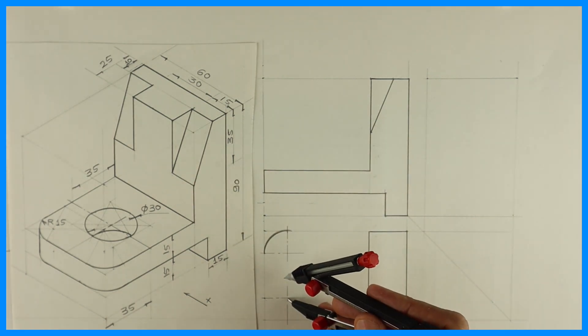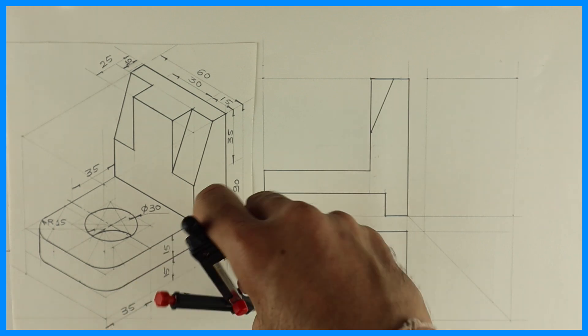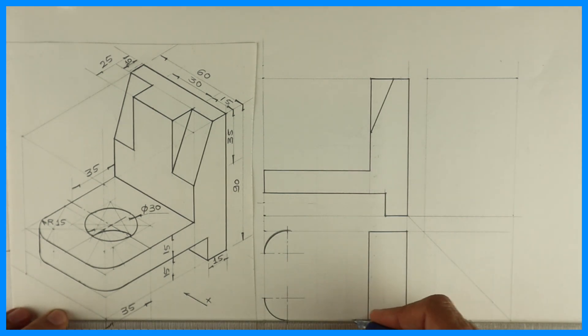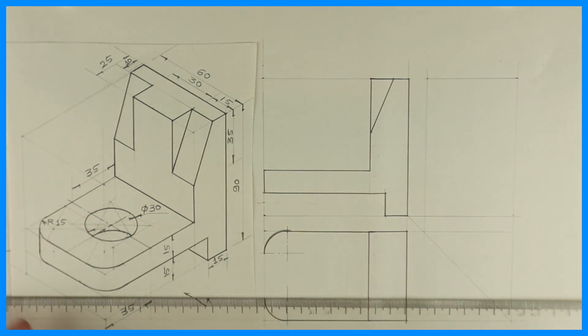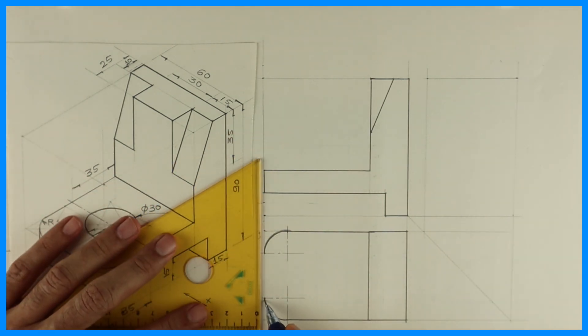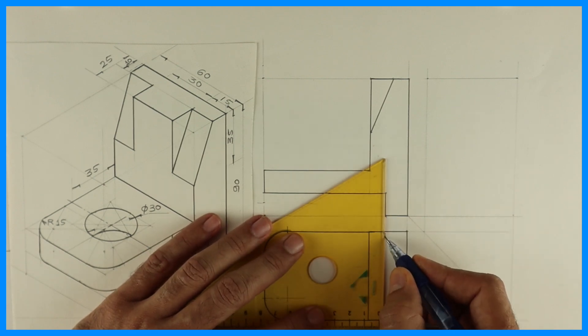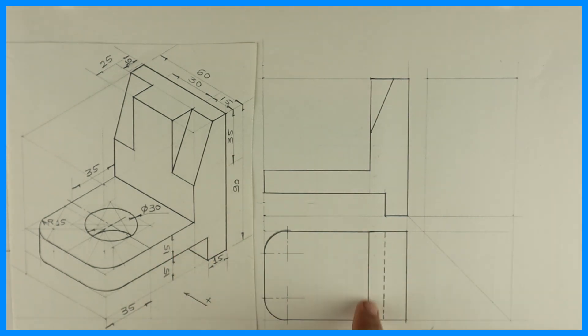This line will be dark. We will draw that line each of the sides and we are drafting this line. This line will be dark. See, this line will be dark. This will be dark. Now this will be dotted because we can't see from the top. See this, this part.